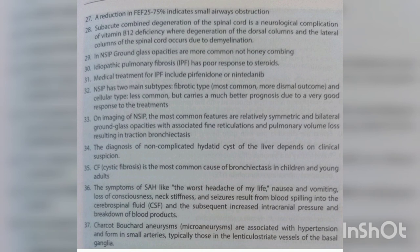The diagnosis of non-complicated hydatid cysts of the liver depends on clinical suspicion. Cystic fibrosis is the most common cause of bronchiectasis in children and young adults. Symptoms of subarachnoid hemorrhage — the worst headache of my life, nausea, vomiting, loss of consciousness, neck stiffness, and seizures — result from blood spilling into the CSF with subsequent increased intracranial pressure. Charcot-Bouchard microaneurysms are associated with hypertension and form in small arteries, typically in the lenticulostriate vessels of the basal ganglia.